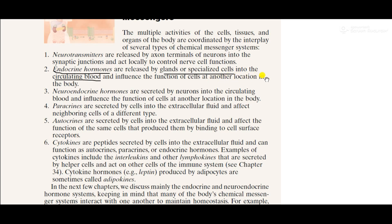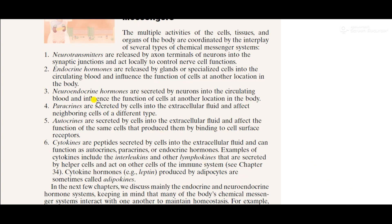Endocrine hormones are released by glands or specialized cells into the circulating blood and influence the function of cells at another location in the body. Neuroendocrine hormones are secreted by neurons or the axon terminals of neurons into the circulating blood and influence the function of cells at another location. Comparing these: neurotransmitters are released into synaptic junctions, endocrine hormones from glands into the blood, and neuroendocrine hormones from neurons into the circulating blood.